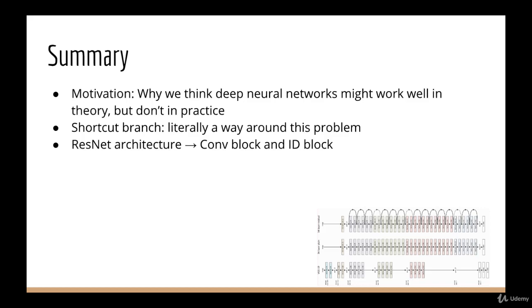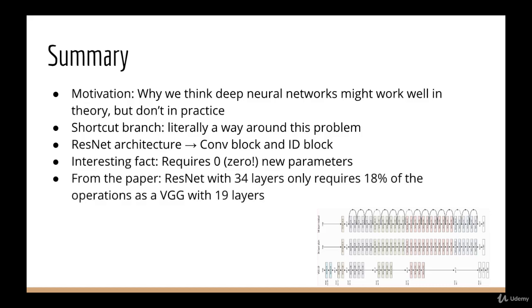One interesting aspect of the ResNet, unlike many of the other deep learning components we've learned about, is that this technique adds zero new parameters. In other words, we train exactly the same number of parameters as we would have had there been no residual connections. Only the architecture has changed. That's pretty nice because, as you know, more parameters can lead to overfitting, and less parameters means less training time. What's also interesting is, if you read the paper, you'll see that they mention a ResNet with 34 layers actually only requires 18% of the number of operations as a VGG with 19 layers. That's pretty significant savings considering it's almost double the number of layers.